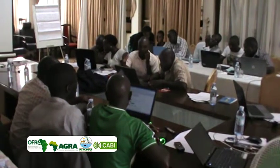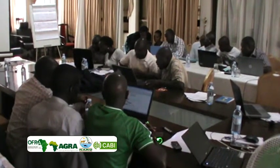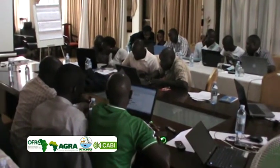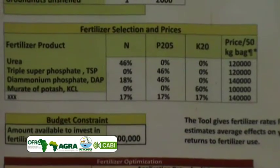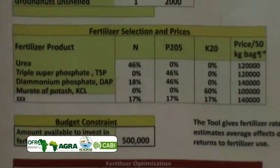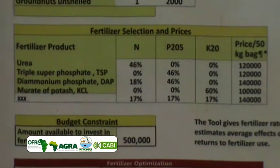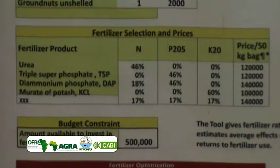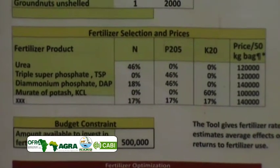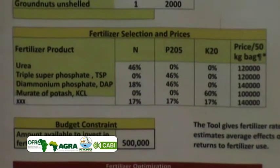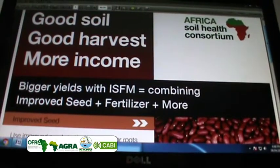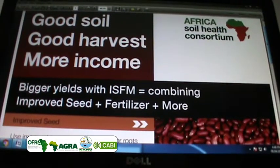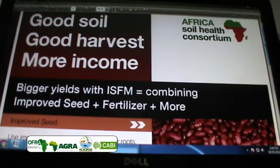Fertilizer use in Uganda remains low, yet soil fertility, which is crucial in boosting crop productivity, has declined. With the ever-growing population, the space for farming is reducing day by day, and it is therefore important that farmers get better yields even on small pieces of land through optimal use of fertilizer.